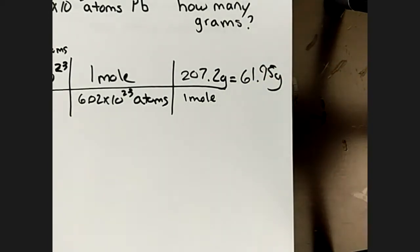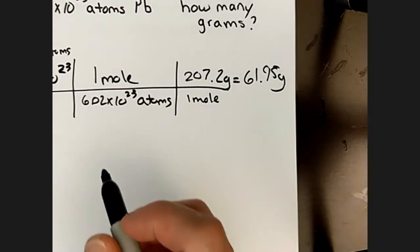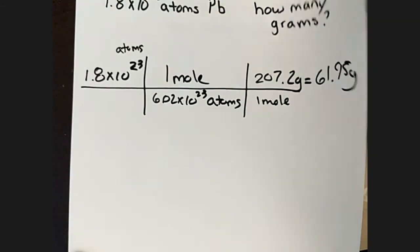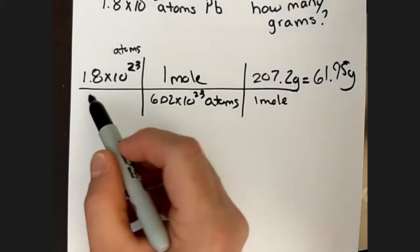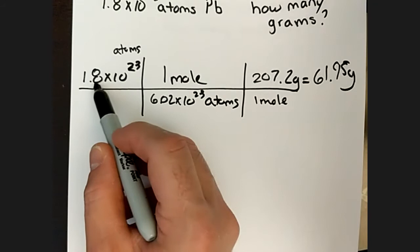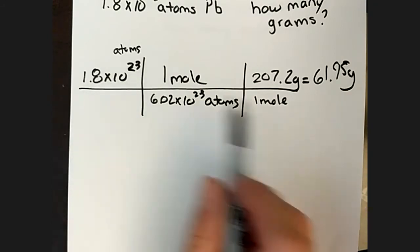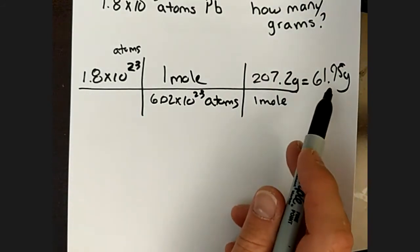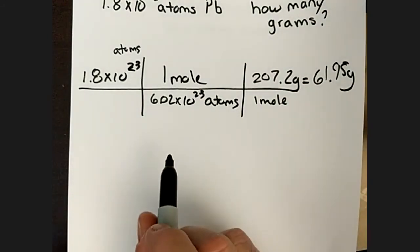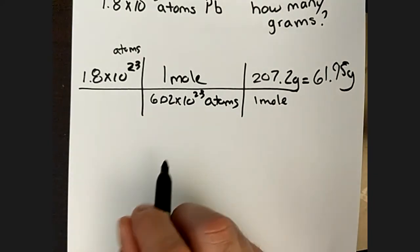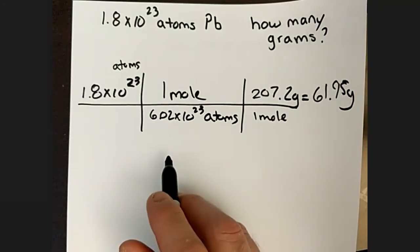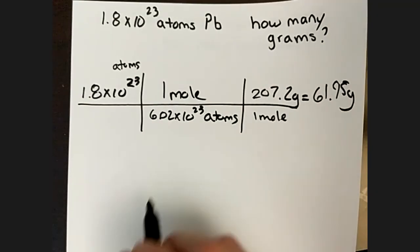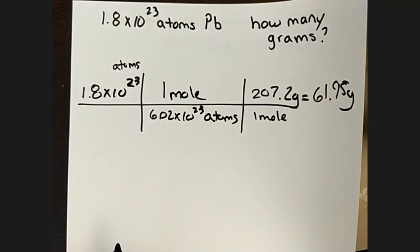Then of course you would apply sig fig rules. There are only two sig figs in our given number, so technically the answer would have two significant figures. You can put this in scientific notation to work that out.